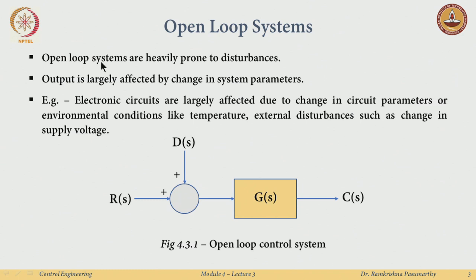Open-loop systems are heavily prone to disturbances. The output is affected by changes in system parameters — for a mechanical system, a mass could change or any other component. It could also change because of external environmental conditions like temperature, or disturbances may act on the system and you would not know how to bring the system back to the original state.